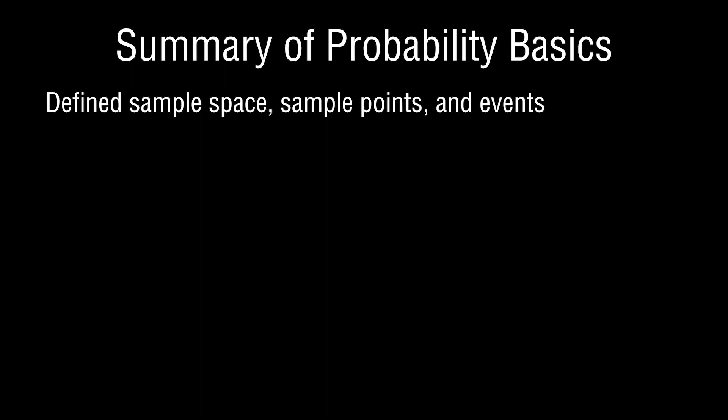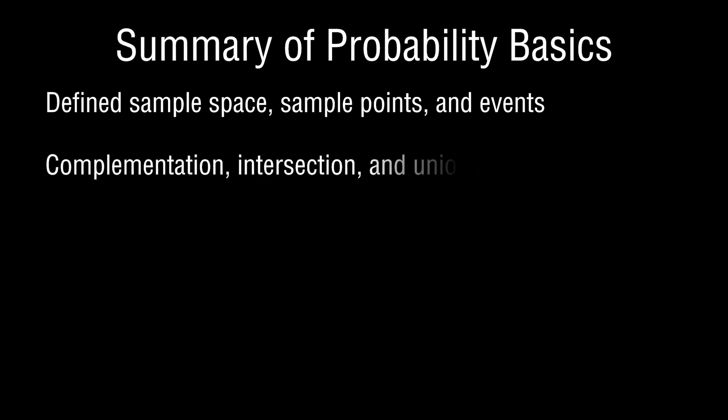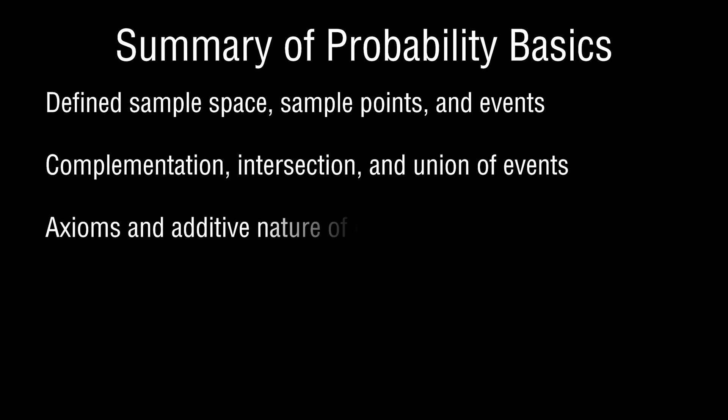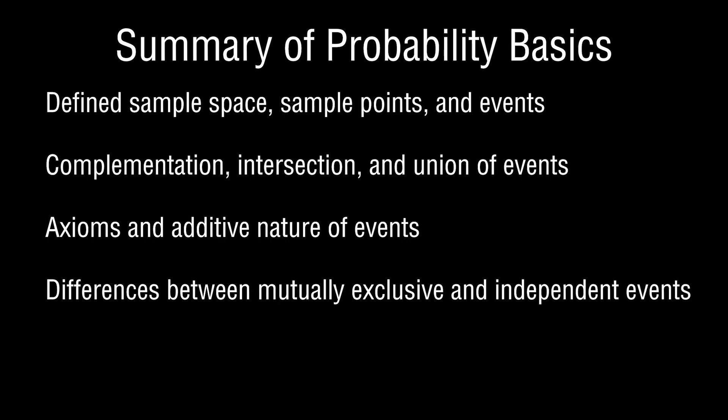To summarize the key points: we've introduced fundamental concepts underlying probability — sample space, sample points, and events. We defined the interactions between events: complement, intersection, and union. We discussed the axioms of probability and the additive nature of events, where mutually exclusive events allow us to simply sum probabilities to compute their union. The key distinction is between mutually exclusive events — where the joint occurrence is zero — and independent events — where the conditional probability of a given event does not depend upon another event.